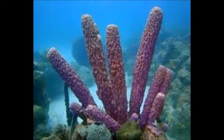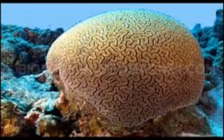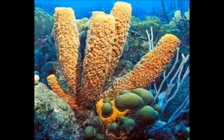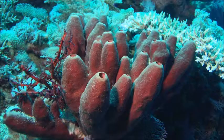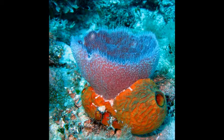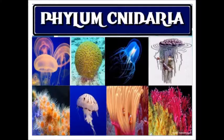This phyla consists of only sponges — interesting creatures. Porifera is the only phyla that is asymmetrical. These organisms don't have any tissues. Their digestive systems form with the anus coming first.